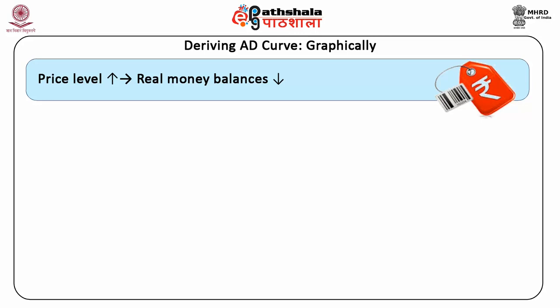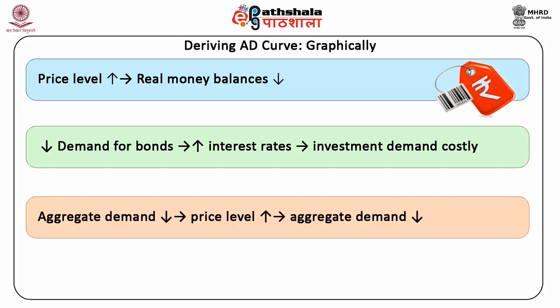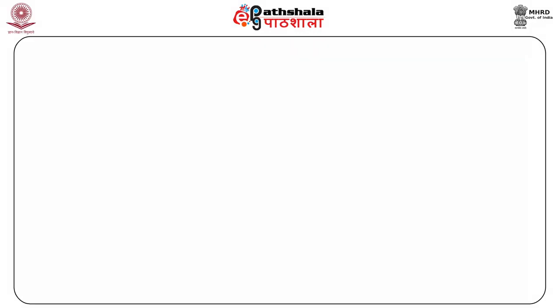Similarly, when the price level in the economy rises, real balances decrease, reducing the demand for bonds in the asset market. This increases interest rates, making investment demand costly in the goods market. Hence, aggregate demand decreases. Thus, when the price level rises, aggregate demand falls.